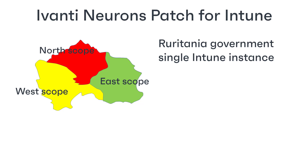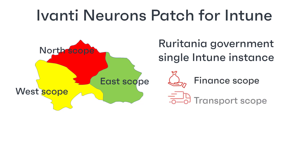Similarly, they could create separate scopes for each government department — finance, transport, health, and so on. In both these cases, the central function has access to everything, but the separate regions or departments can see only their own data. I'm sure you can think of other examples for other types of organization.